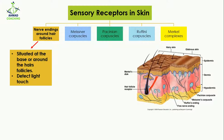The nerve endings around the hair follicles are situated at the base or end of the hair follicle. The blue part shown here represents the nerve endings surrounding the hair follicle. They are going to detect light touch — any light touch that moves your hair can be detected by these nerve endings surrounding the hair follicles.